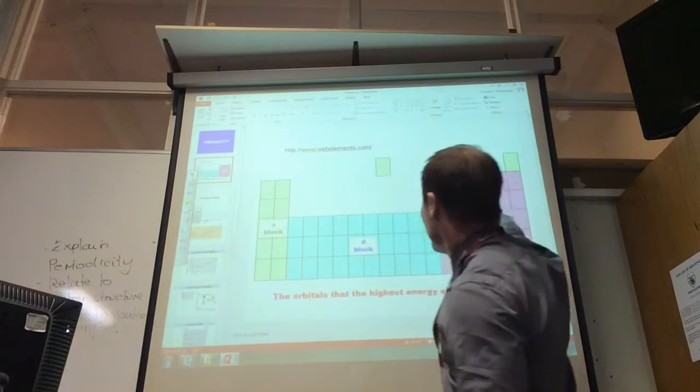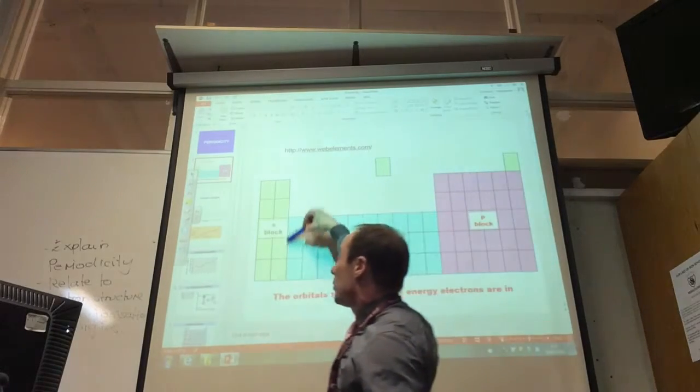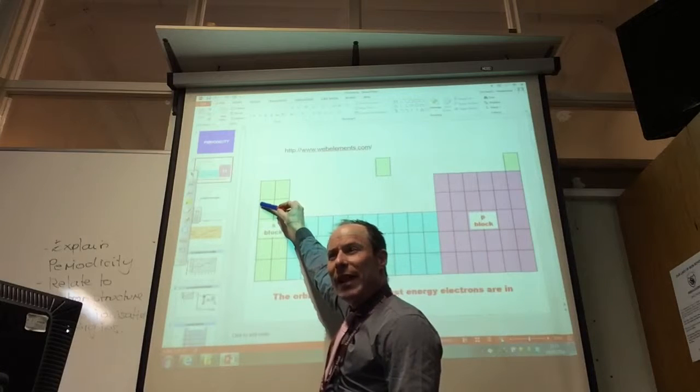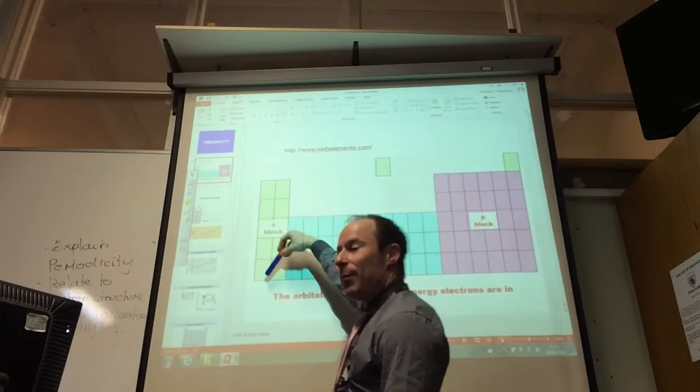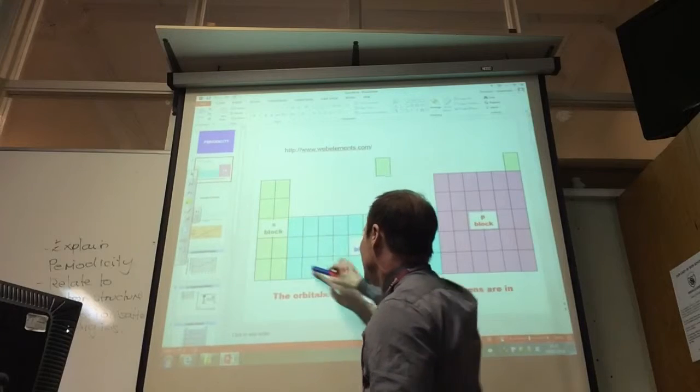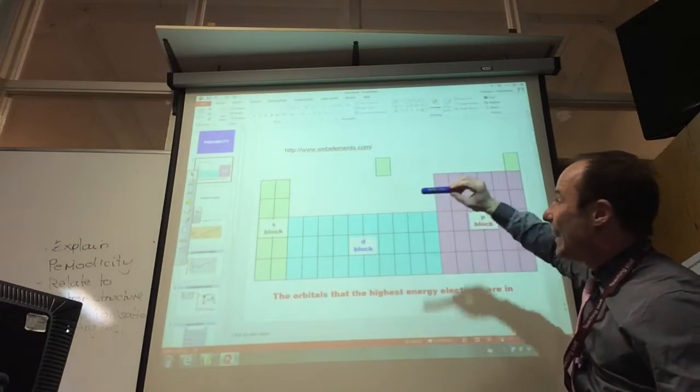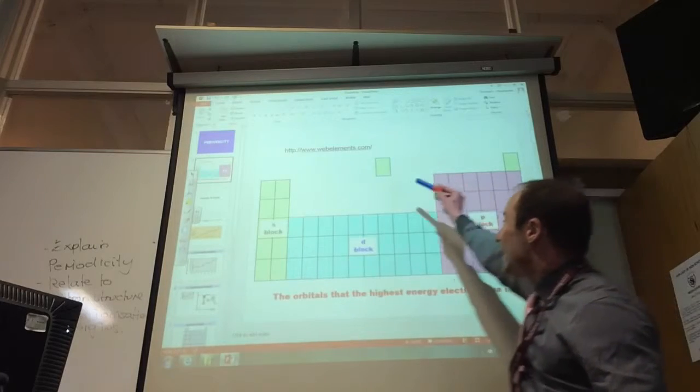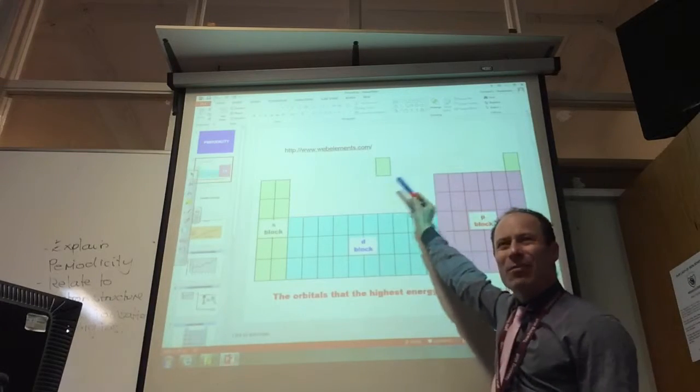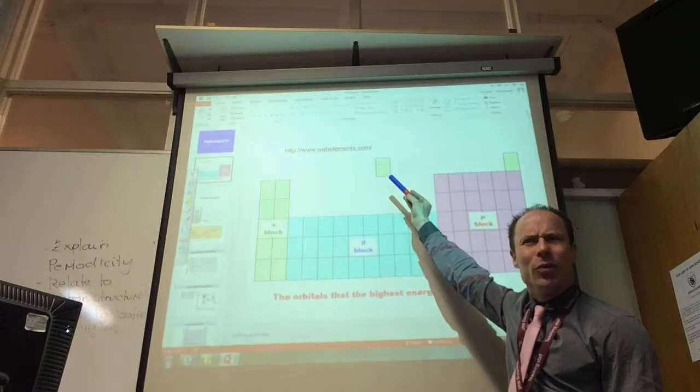So, that is the first pattern, and that's why we call this the S block, because we're filling up the S subshell. This is a D block, because we're filling up that, that's a P block. On your handout, you notice this is hydrogen, that's helium. So, these move depending on the periodic table you're looking at.